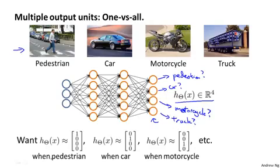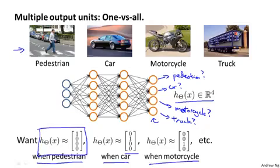And thus, when the image is of a pedestrian, we would ideally want the network to output [1,0,0,0]. When it's a car, we want it to output [0,1,0,0]. When it's a motorcycle, we want it to output [0,0,1,0], and so on. So this is just like the one versus all method that we talked about when we were describing logistic regression. And here we have essentially four logistic regression classifiers, each of which is trying to recognize one of the four classes that we want to distinguish amongst.